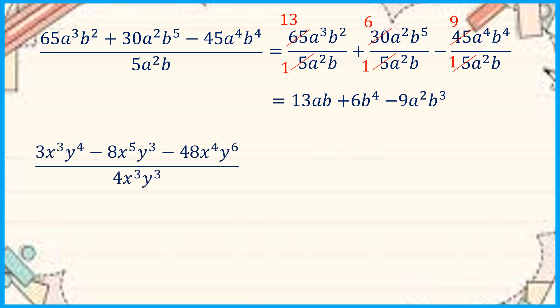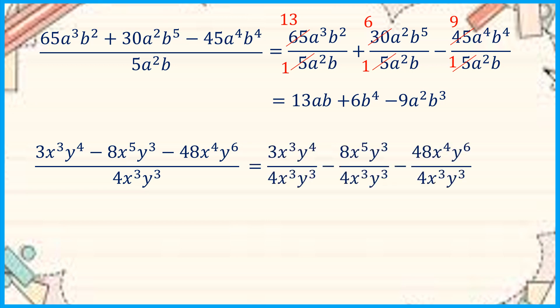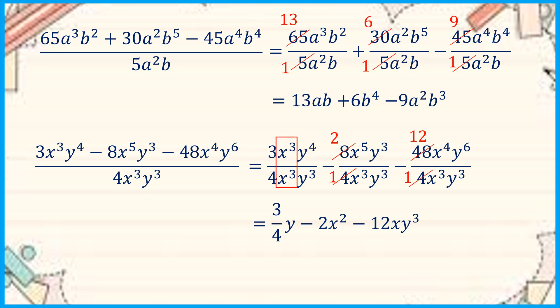Now let us have another one: 3x to the third y to the fourth minus 8x to the fifth y to the third minus 48x to the fourth y to the sixth, all divided by 4x to the third y to the third. We separate and simplify each term. 8 over 4 becomes 2, and 48 over 4 becomes 12. So we get 3 over 4 x to the zero y — meaning just y — minus 2x squared minus 12xy to the third. Note that x to the third divided by x to the third equals 1, and y to the third divided by y to the third equals 1.